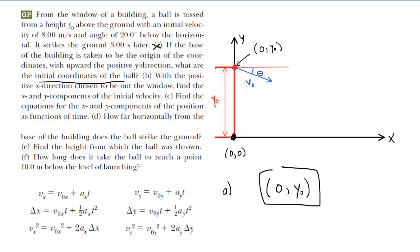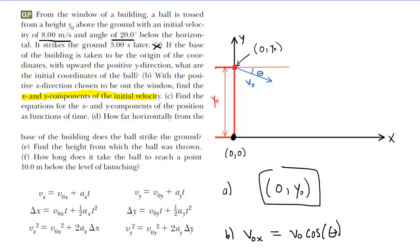We will move on to part B. Most of us probably know that the initial velocity in the x-direction is simply going to be the initial velocity multiplied by the cosine of the launch angle. We were told that the initial velocity with which this ball is thrown is 8 meters per second, launched at an angle of 20 degrees.